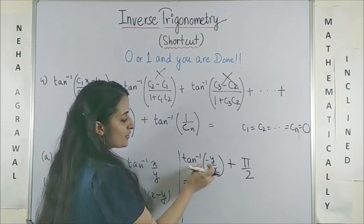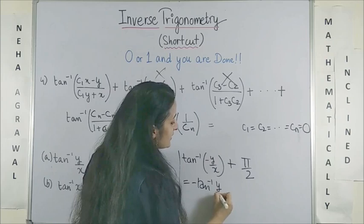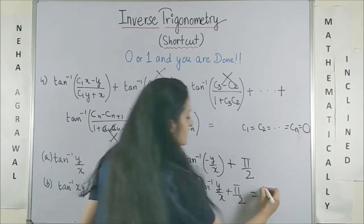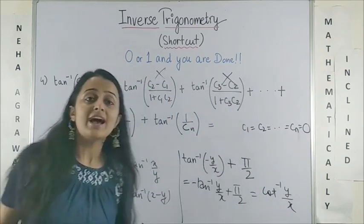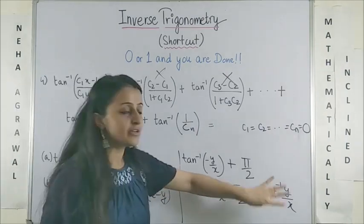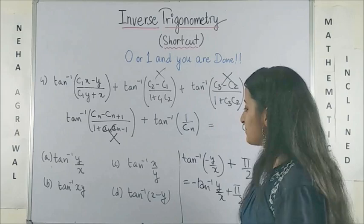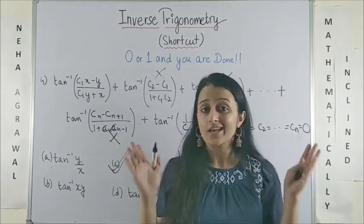So, pi by 2 minus tan inverse of y by x is cot inverse of y by x. Since your option has tan inverse, you know the moment you flip this, you will get your answer to be tan inverse x by y which is right there. Wasn't this easy?